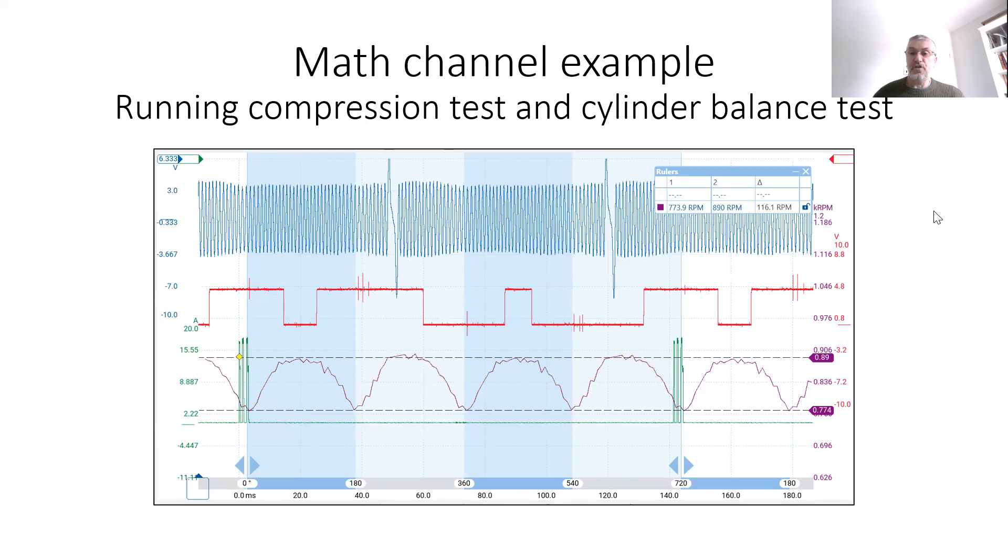So for those of you not so used to the math channel, this is just a math calculation based on the speed of the crankshaft. And from this, you can do a running compression test and a cylinder balance test. For the compression side of it, you can see you can measure the slowest speed of the crankshaft.